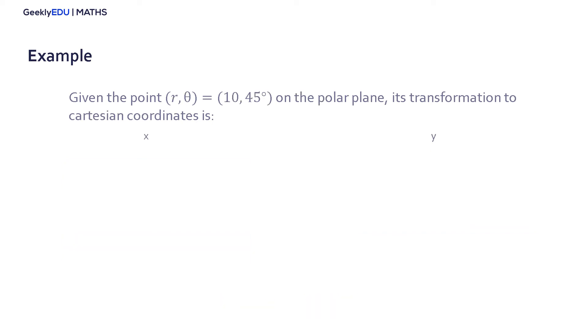And one more example. Now, going from polar coordinates to Cartesian coordinates, being (r, θ) = (10, 45°).